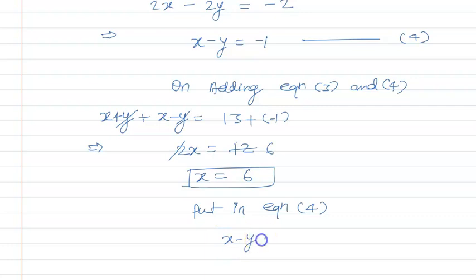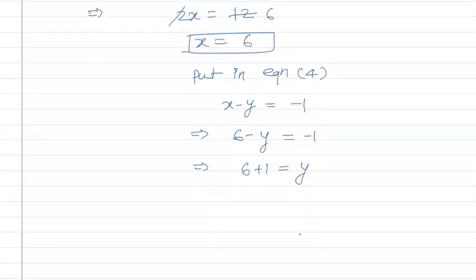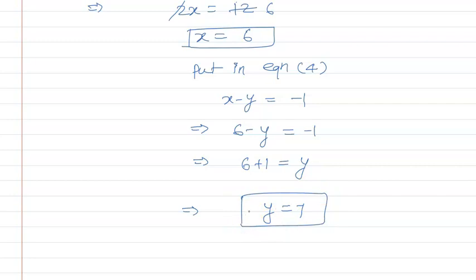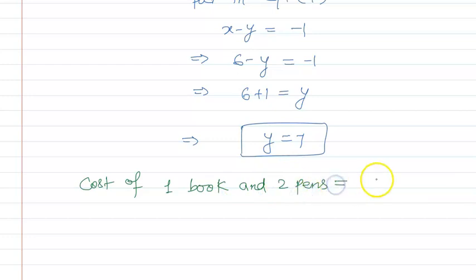Equation 4 is x minus y is equal to minus 1. Putting x equal to 6: 6 minus y is equal to minus 1, so y is equal to 6 plus 1, which gives y equal to 7. Now, the required cost of one book and two pens will be equal to x plus 2y.